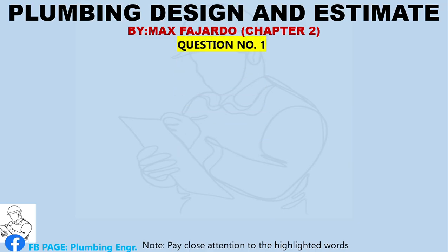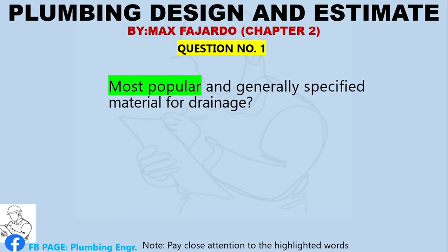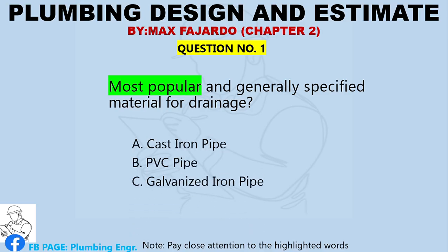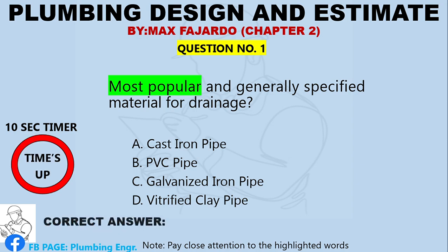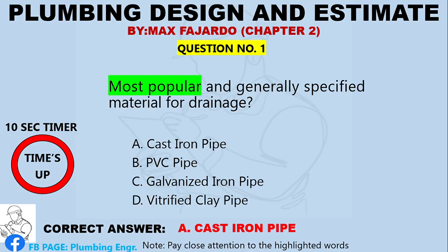Question Number 1. Most popular and generally specified material for drainage? A. Cast iron pipe. B. PVC pipe. C. Galvanized iron pipe. D. Vitrified clay pipe. Correct answer: Letter A, cast iron pipe.